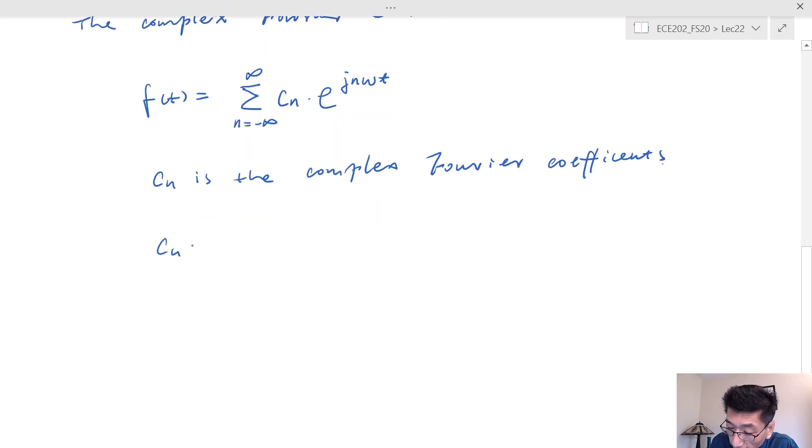The way we find C_n is going to be equal to 1 over T times the integration of f(x) times e^(-j*n*omega*t) dt.